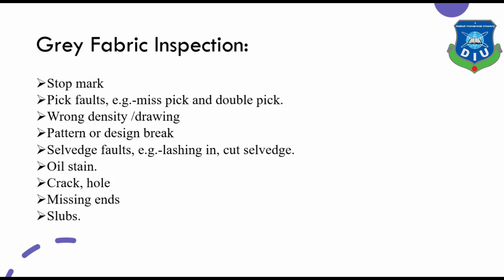Our first process is gray fabric inspection. From the knitting section, we have to receive the gray fabric. Then we have to inspect all the gray fabric. We have to check for stop marks, peak faults, wrong density or drawing, pattern or design break, selvage faults, oil stain, crack, hole, missing ends, slabs, etc. If these faults are not in the fabric, then we approve and go for the next procedure.